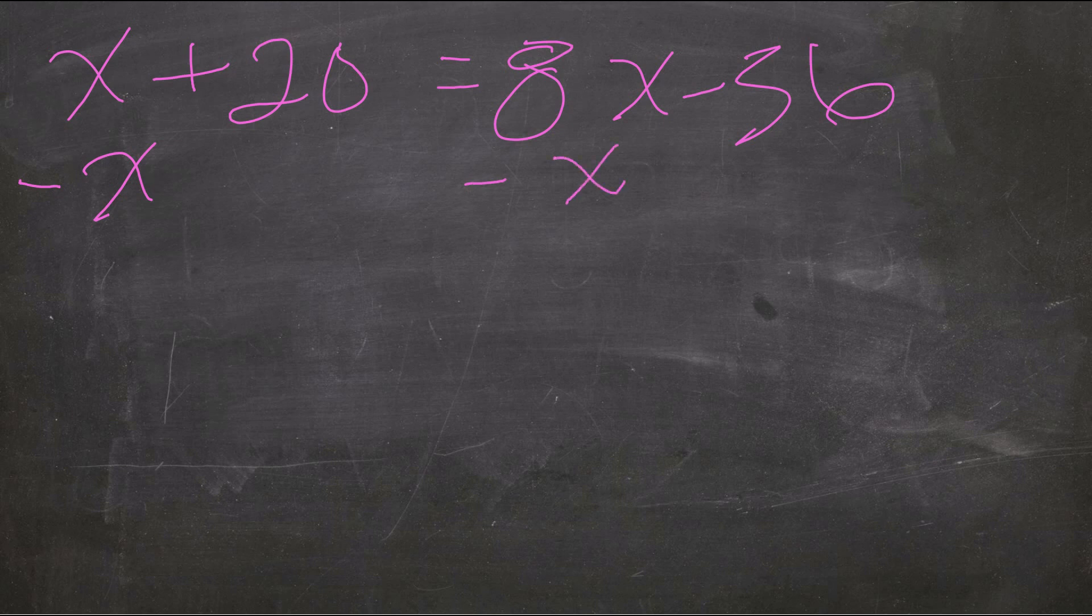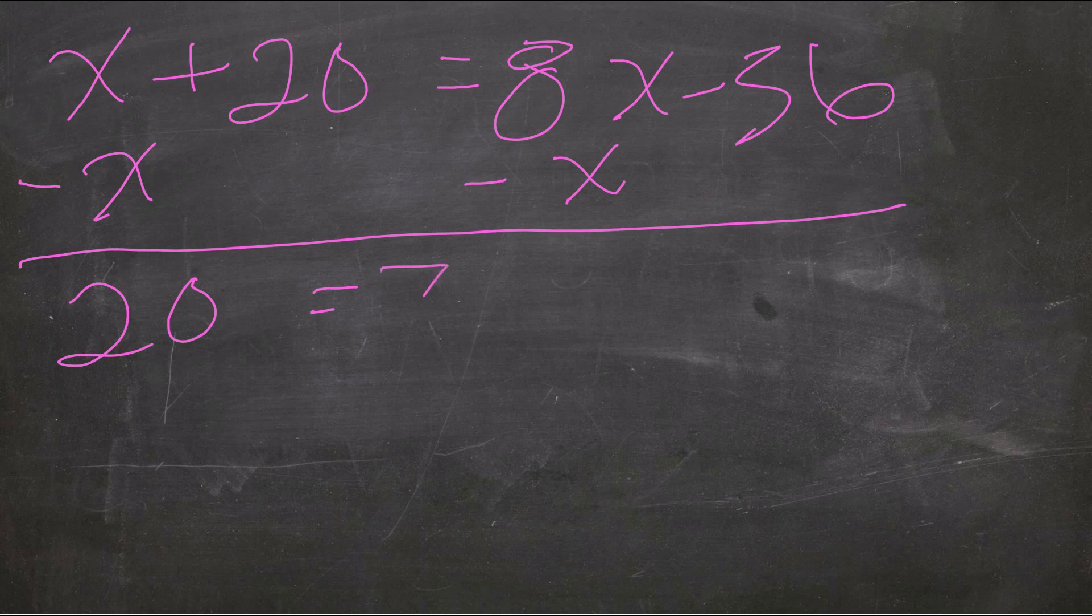Next, I'm going to simplify 4 over 4x. That's just 1x. So I've rewritten the equation. Now I can solve. That fraction was eliminated. So I subtract x from both sides. I get 20 equals 7x minus 36.